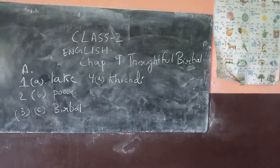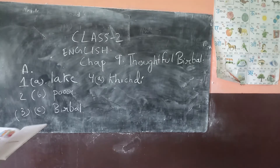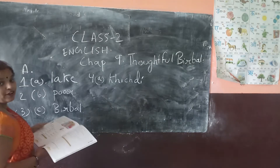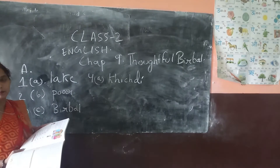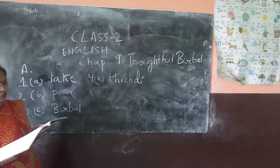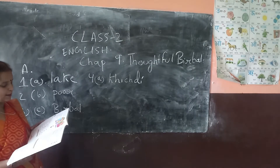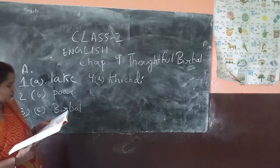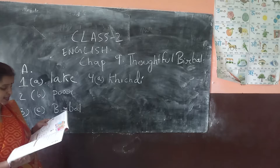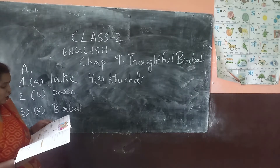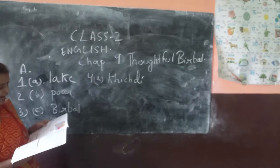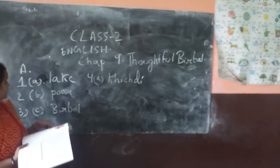Let's do the tick the correct option. The first question is, where did Akbar and Bilbar go for a walk? The option is late, Bilbar path.